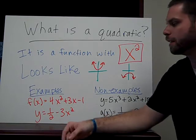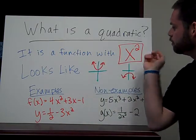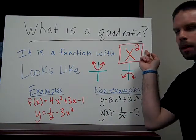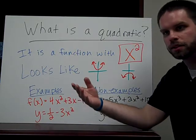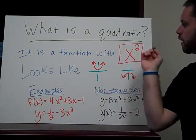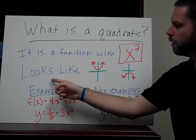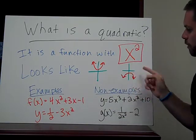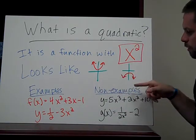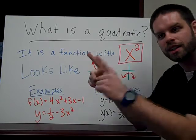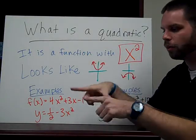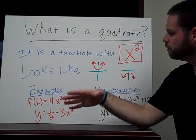So you might be asking yourself, what is a quadratic? A quadratic is a function with an x squared. So just like a linear is a function with an x to the 1, a quadratic is a function with an x squared. What they look like are u shapes. They can be u's pointed up, u's pointed down, very skinny u's, or very wide u's. But they're u-shaped.